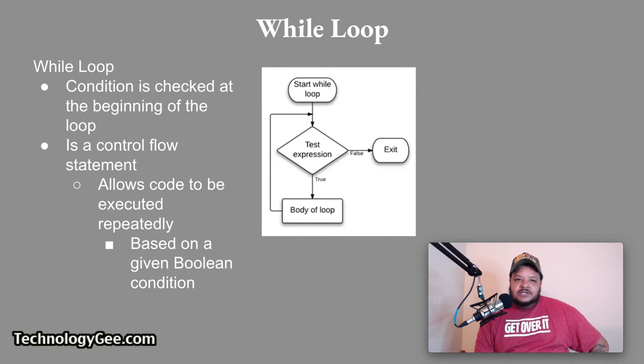A while loop. So in a while loop, the condition is checked at the beginning of the loop. A while loop is a control flow statement that allows code to be executed repeatedly based on a given Boolean condition. So we got the diagram here. Start while loop. It tests the expression at the beginning. And if the expression turns out to be false, it'll exit. And if it turns out to be true, it'll just keep repeating itself until somehow this thing magically becomes false.